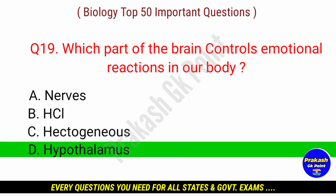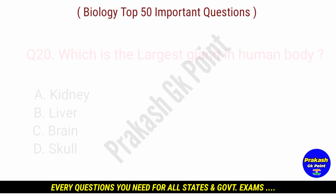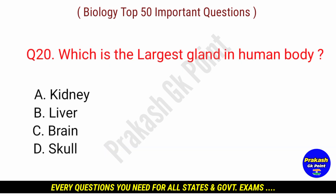Answer: option D — Hypothalamus. Next question: which is the largest gland in the human body?